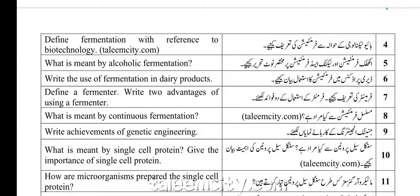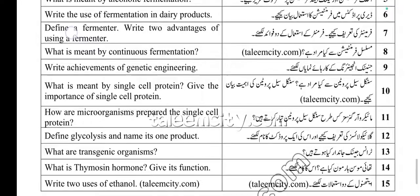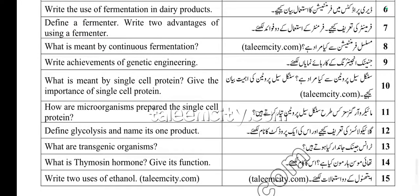Achievements of genetic engineering is another important short question. Define glycolysis and name its one product — important short question. Transgenic organism — important short question. Single cell protein (SCP) is a very important short question for you.